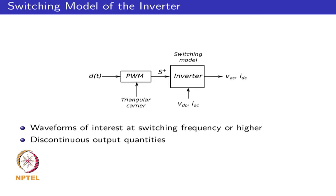If you look at the switching model, it captures detailed information about the operation of the power converter. It has all the details about the waveforms of interest, especially if you are looking at quantities at the switching frequency or even higher frequencies, then the switching model is very useful. Also, if you are looking at things like ripple, switching ripple, PWM spectrum, EMI related issues, then the switching model can actually provide you a lot of information.